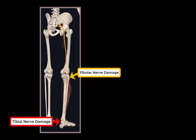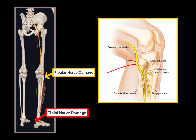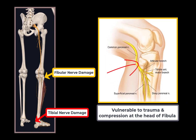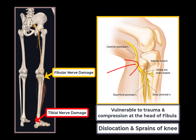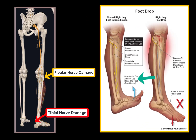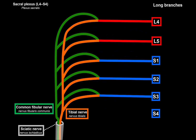The fibular nerve is covered only by skin near the head of the fibula, making it most vulnerable to trauma and compression from incorrectly applied casts. Dislocation and sprains of the knee can also damage it. Fibular nerve damage impairs the anterior muscles of the leg, resulting in a flapping foot, inability to stand on the heels, and gradual deterioration of the foot arches due to dysfunction of fibularis longus.